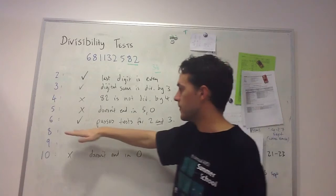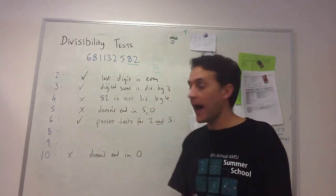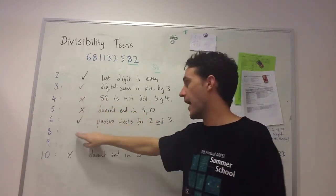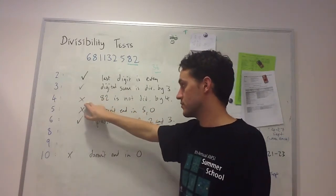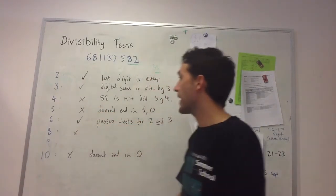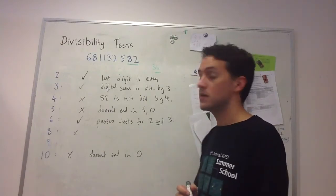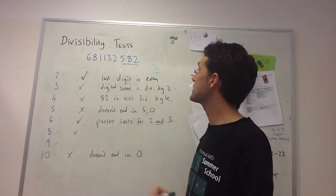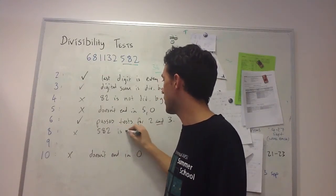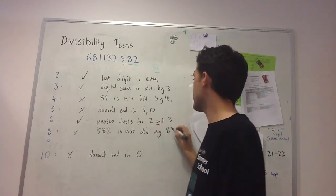For 8, I already know it's not divisible by 8 because it wasn't divisible by 4, and everything divisible by 8 is also divisible by 4. Usually, I'd look at the last 3 digits. In this case, 582 is not divisible by 8.